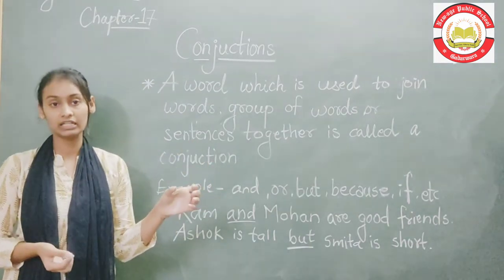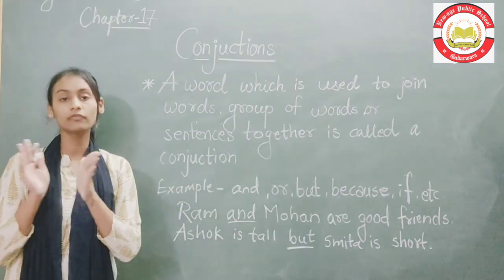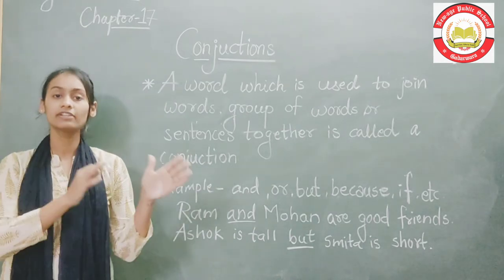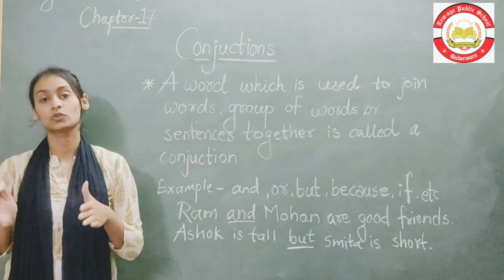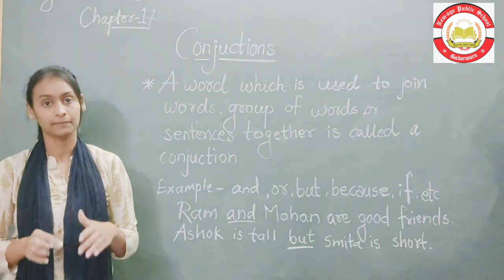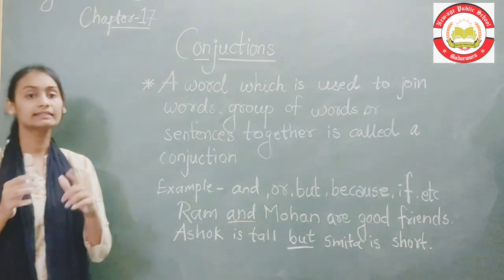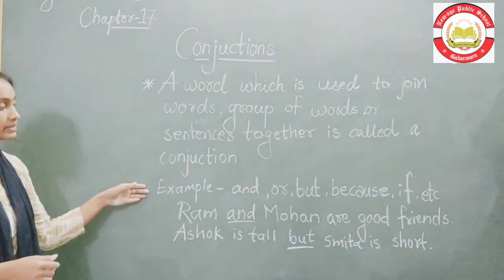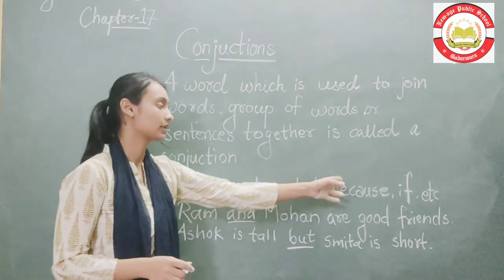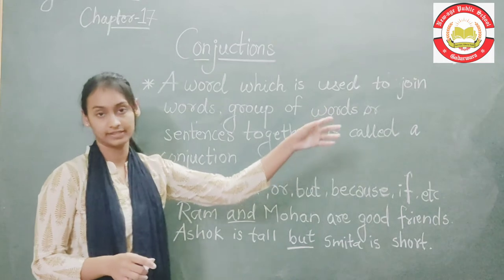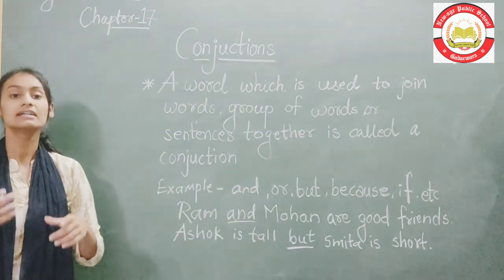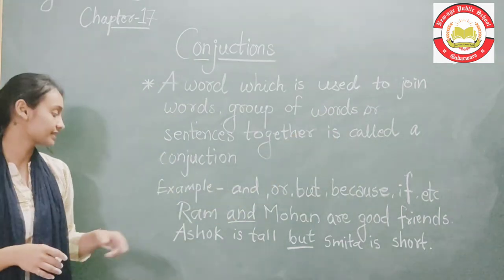These are words used to join groups of words and sentences together. Examples of conjunctions include: and, or, but, because, etc. These are the examples. A sentence is like this.